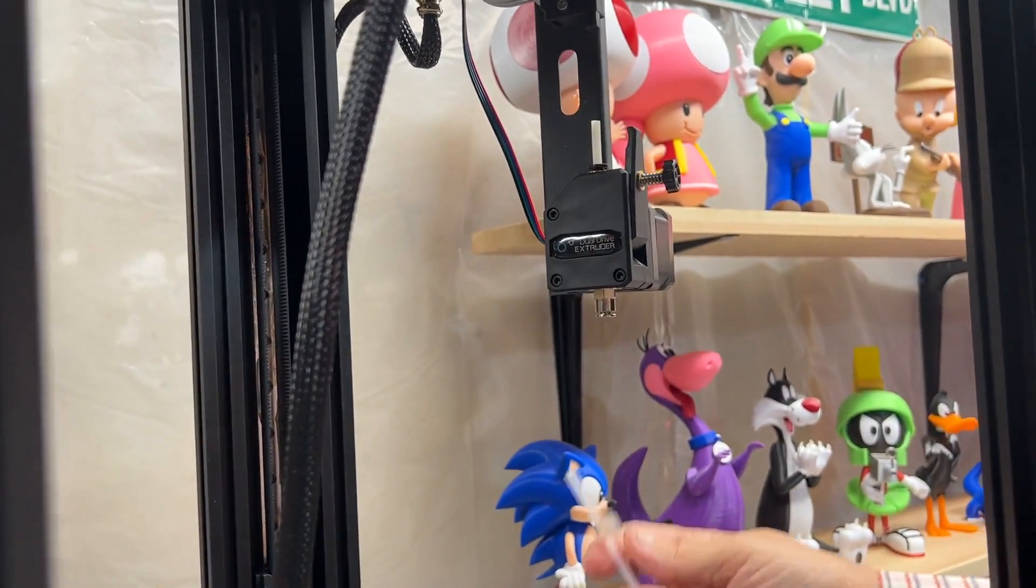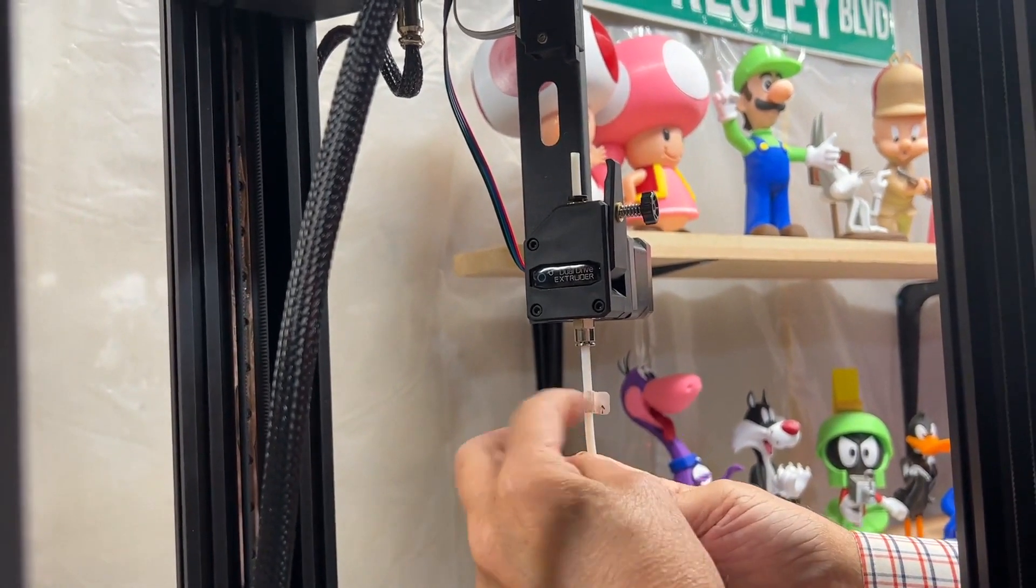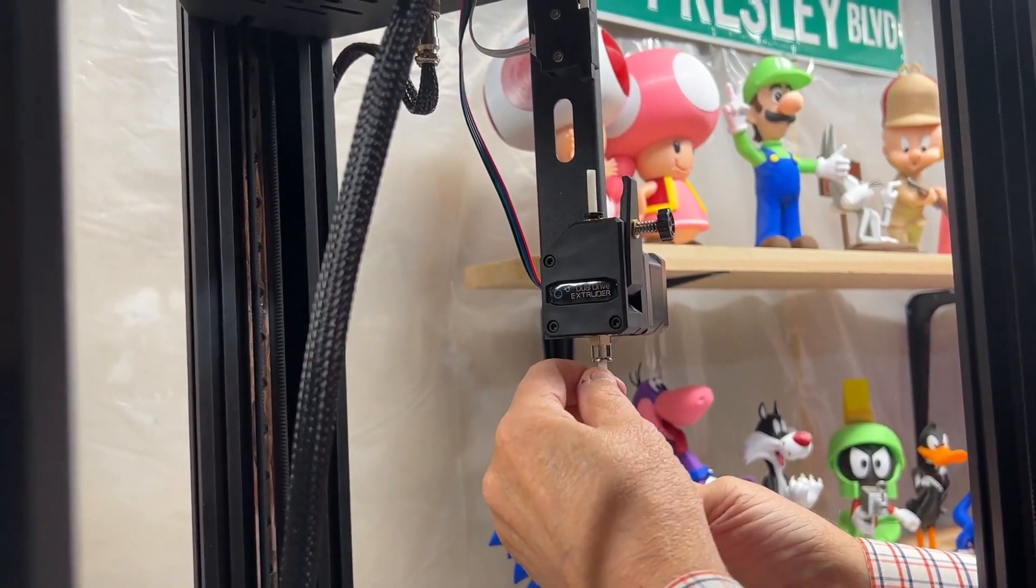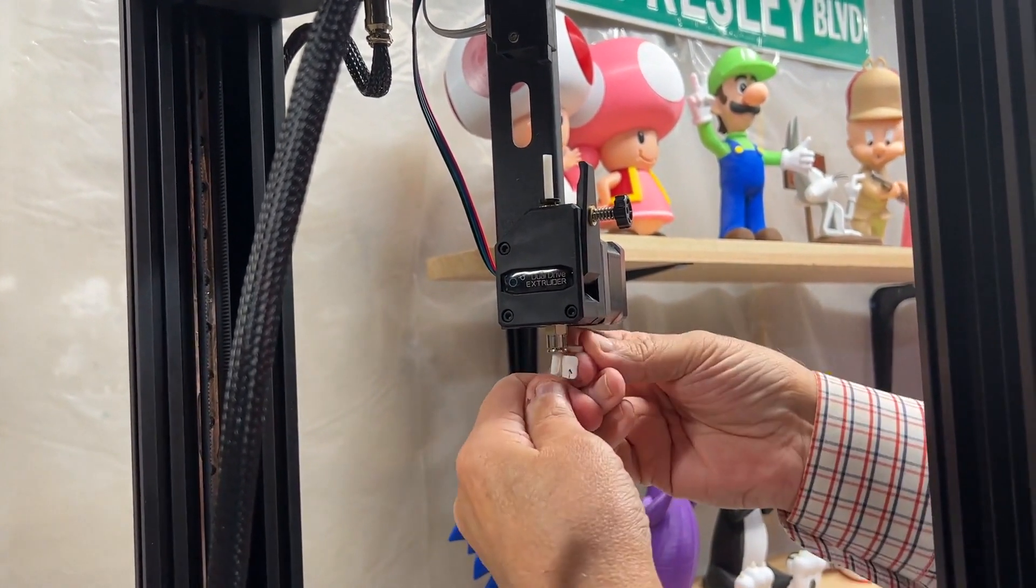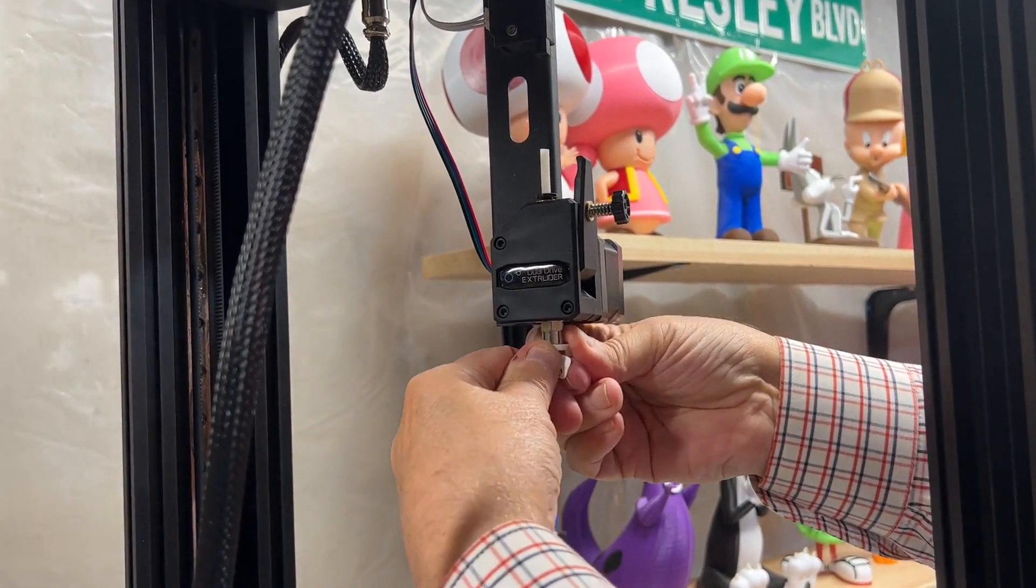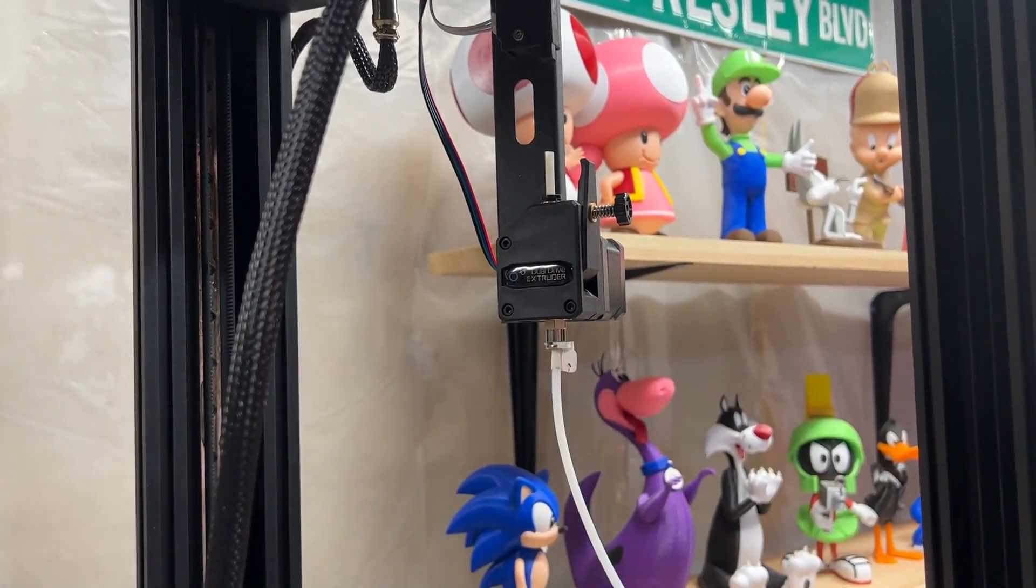We're going to put the PTFE tubing back in. Again, make sure it goes right up to the label there. Put our little white clip back in. And there you have it.